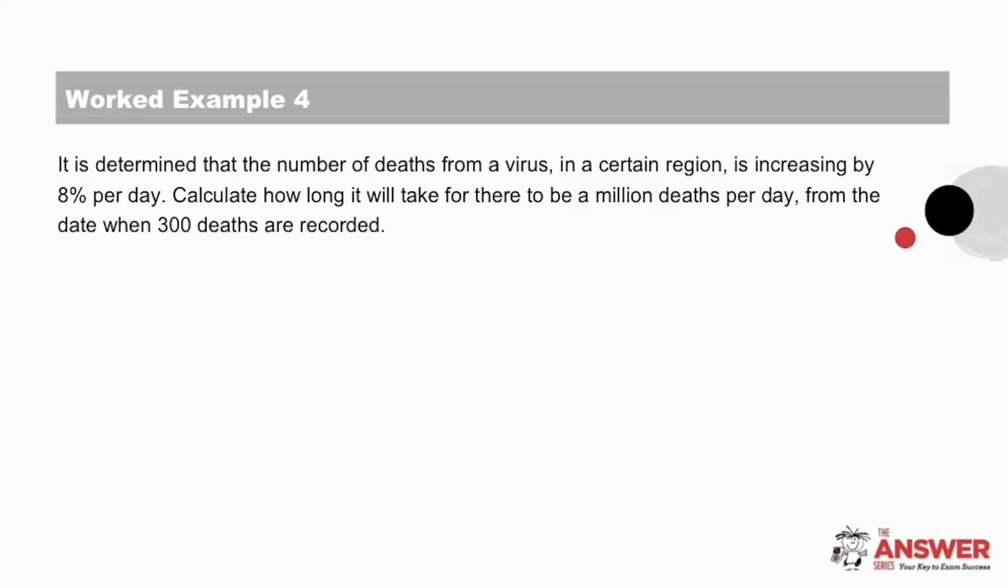So let's have a look at the detail. It says that a number of deaths from a virus increases by 8% per day. We have been asked to calculate how long it will take for there to be a million deaths per day from when 300 deaths are recorded. We've given you the opportunity here to give this one a try on your own. So pause the video here and give some thought to what to do and hopefully even give it a try before moving on to see the solution.